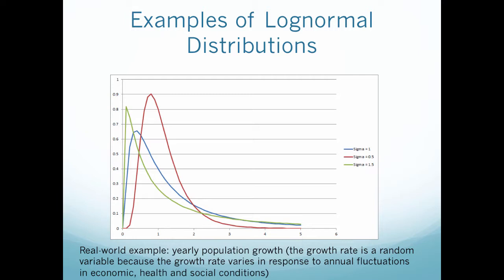This is an example of a lognormal distribution. As you can see, it's not symmetric about my mean. And this is what changing the sigma value does. So this is a sigma value of 1, sigma value of 1.5, and sigma value of 0.5.